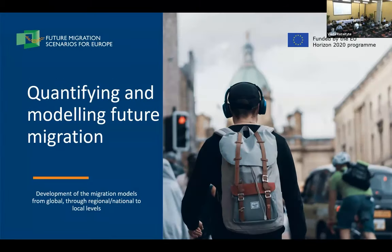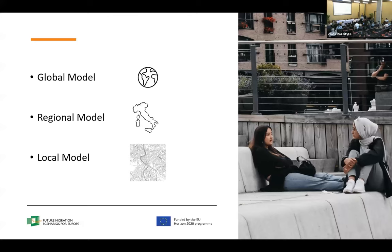I'll be talking about the development of all our models produced in the FUME project. We have three different models on three different spatial scales: a global model for international migration flows, a regional model, and a local model. They feed into each other from the global model to the regional and local model. All of them have been developed by different teams and different institutes. I was working on the global model; I'll try to give a brief overview of the other two as well, but if you have questions, there are experts in the audience you can ask later.